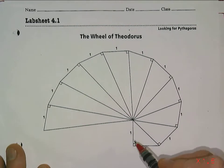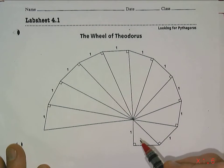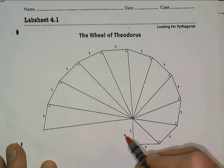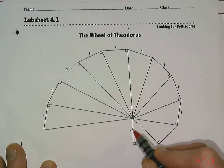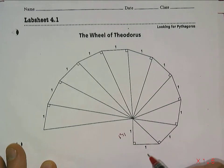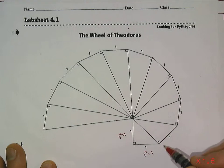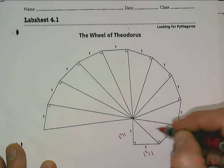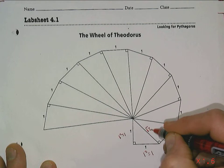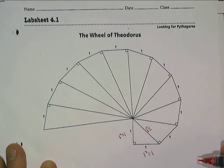Let's work our way around the circle and find some of these lengths. The first one is simple: we have a leg of one, so one squared is one, and another leg of one, so one squared is one. One plus one makes an area of two, so the hypotenuse length is the square root of two for that triangle.